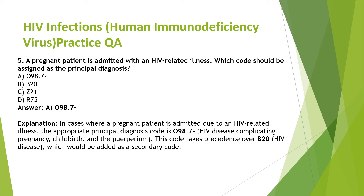Last question: a pregnant patient is admitted with an HIV-related illness — which code should be assigned as primary? This is the HIV complicating pregnancy concept, so we give priority to pregnancy. The pregnancy complicating code is primary, and the secondary diagnosis should be B20.